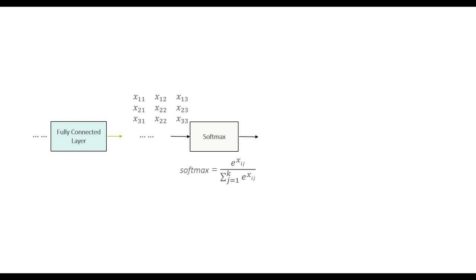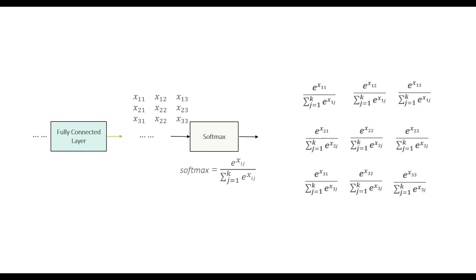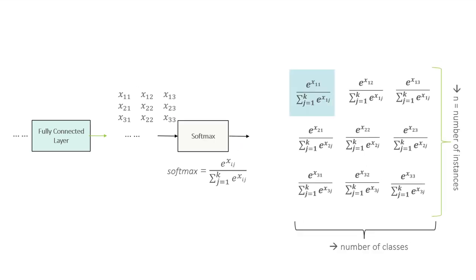The softmax function takes the exponent of each term in this matrix and then tries to find a probability distribution by summing over all the terms in the matrix for a single row. That's how it finally ends up with this output matrix — you feed a three-by-three matrix through a softmax layer and finally get this kind of matrix.